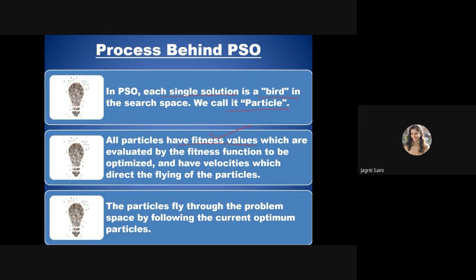Fitness is evaluated by a fitness function that needs to be optimized. Particles also have velocities that direct their movement. For example, if we are optimizing an image for intensity values — restoring a degraded image to achieve best outcomes — the fitness values are defined based on the target intensity level. All particles or pixels in the image space behave according to that target and improve after every iteration.